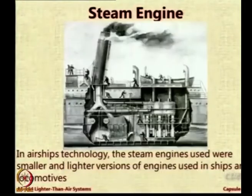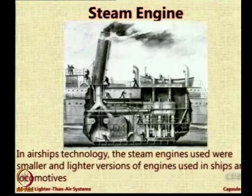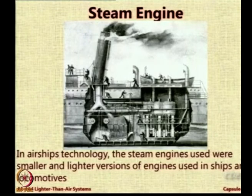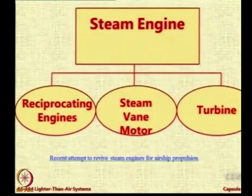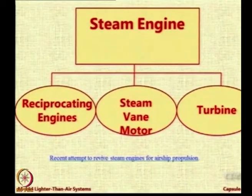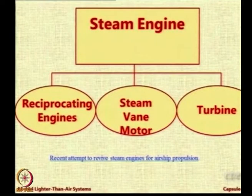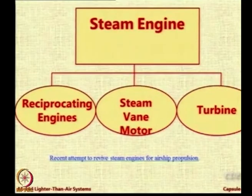Finally, there is an outlet which throws out the steam. Such engines are very popular in locomotives, and a very compact version of steam engines was used in the past to propel airships also. Inside steam engines there are various subsystems — the reciprocating engine uses steam for a reciprocating piston. You could also have vane motors where cup-like things rotate because of the flow of high-speed steam, or you can put a turbine and make it move by impinging steam into it.